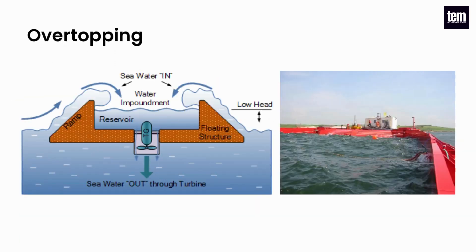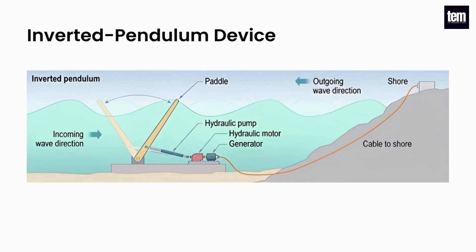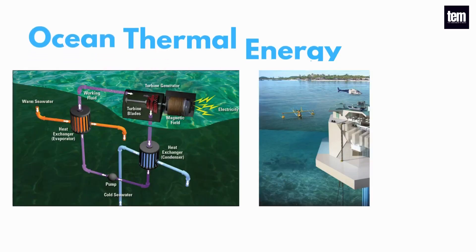Overtopping devices capture water as waves break into a storage reservoir. The water is then returned to the sea passing through a conventional low head turbine which generates electricity. Inverted pendulum devices use the motion of waves to move a hinged paddle back and forth underwater. The motion of the paddle drives hydraulic pumps, which drives electric generators.